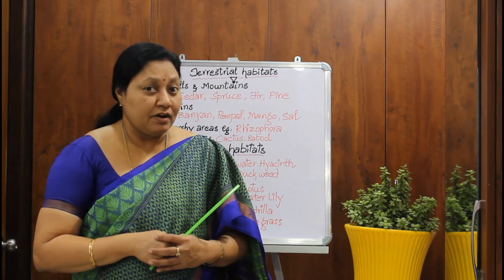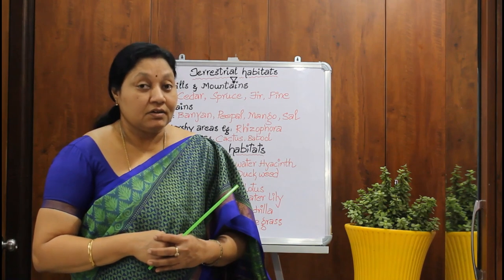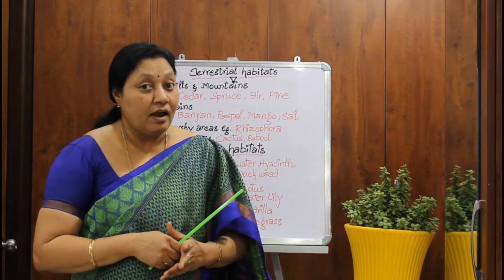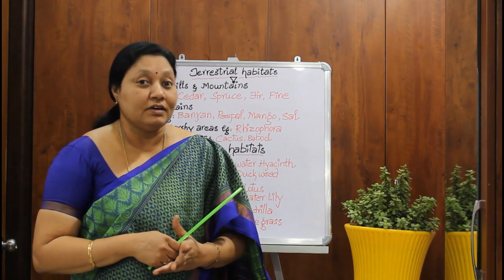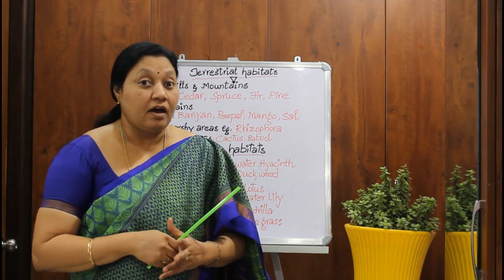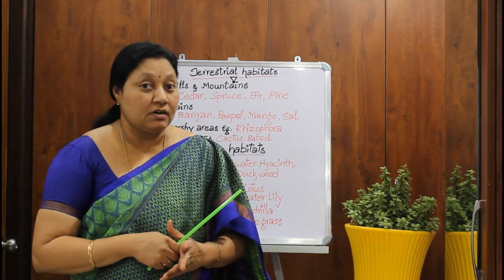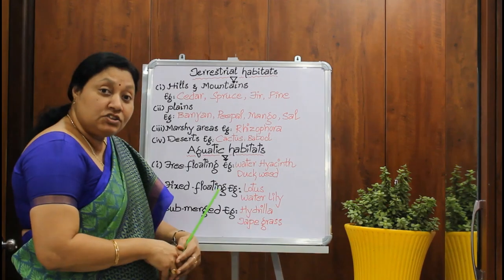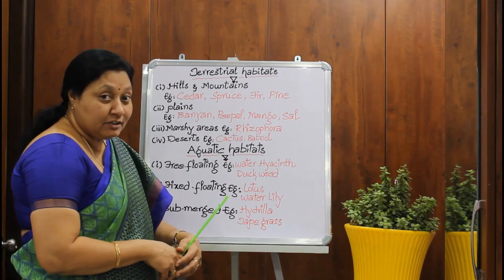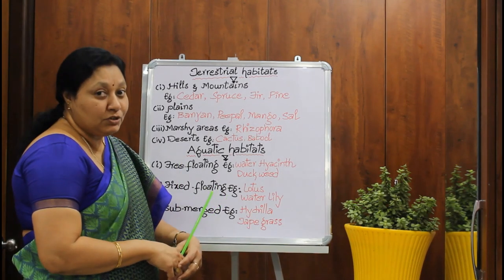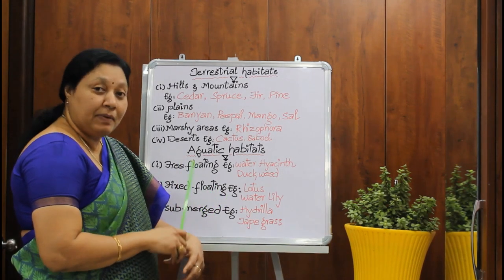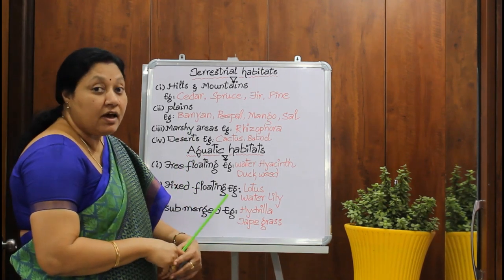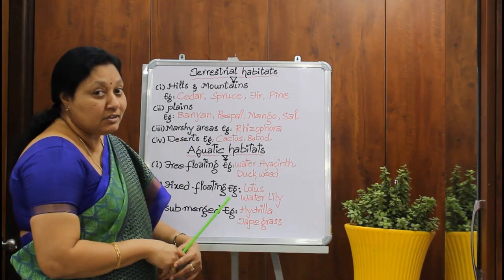Do you remember our earlier class? Terra is the Latin name for land or earth, whereas aqua is the Latin name for water. Terrestrial habitats can be hills and mountains, plains, marshy areas, and deserts.